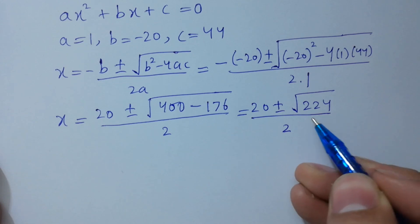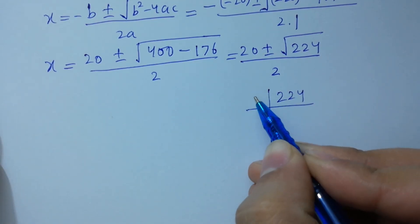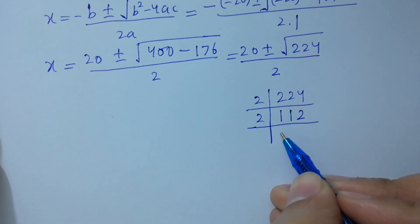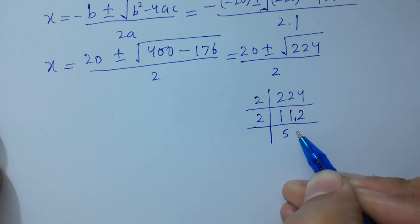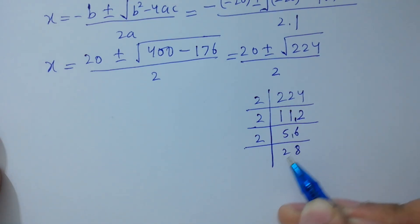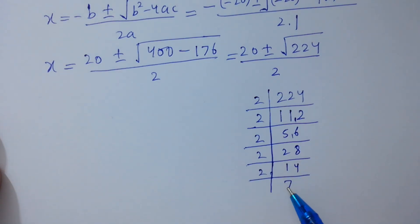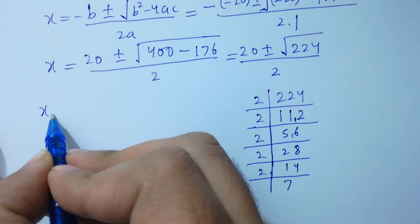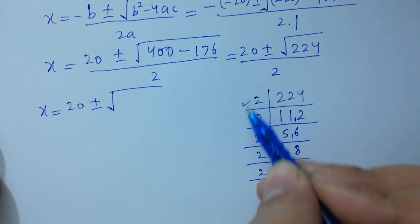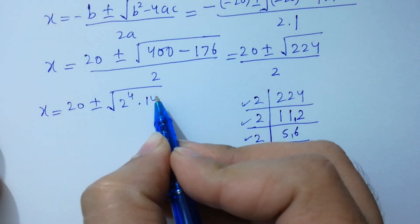Now I am going to find the factors of 224. 224 is divisible by 2. The prime factorization of 224 is 2 to the power 4 times 14, which is 2 to the power 4 times 2 times 7. So x equals 20 plus or minus square root of (2 to the power 4 times 14), over 2.